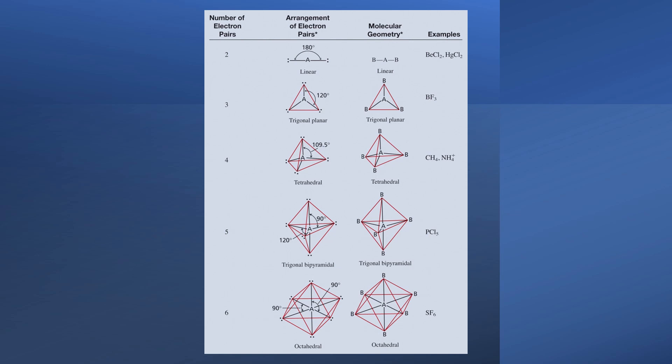The first thing we're going to look at here are situations where we have a central atom bonded to other atoms without the presence of any lone pairs. This simplifies our life because electron pair geometry is always going to be identical to molecular geometry.